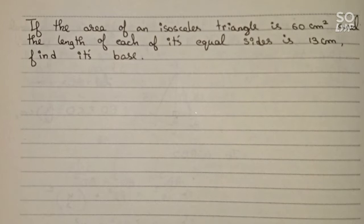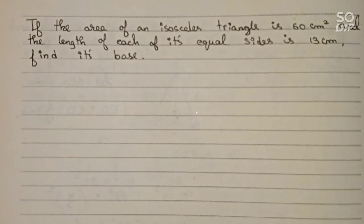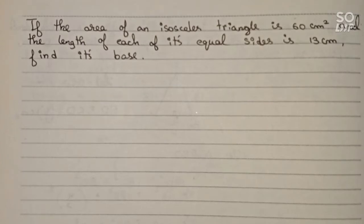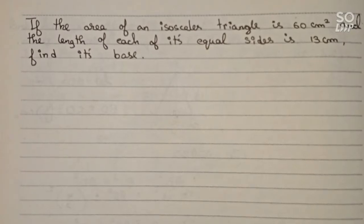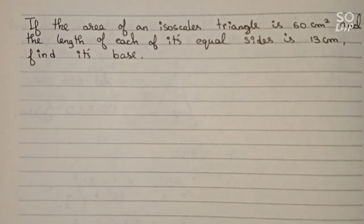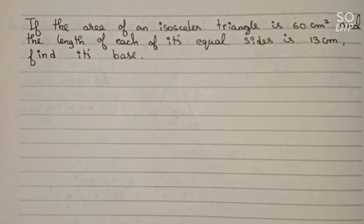Hello guys, welcome to this video. The question is: the area of an isosceles triangle is 60 cm² and the length of each of its equal sides is 13 cm. Find its base and height.